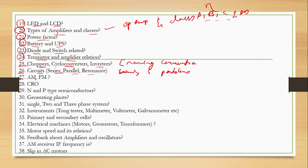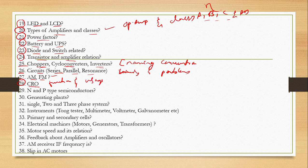AM and FM — amplitude modulation, frequency modulation. CRO function and usage. N-type and P-type semiconductor.